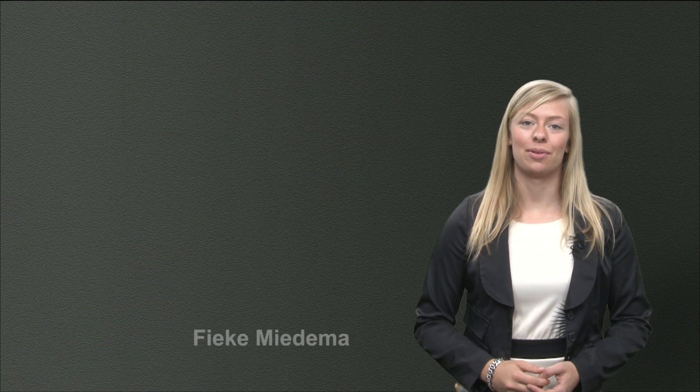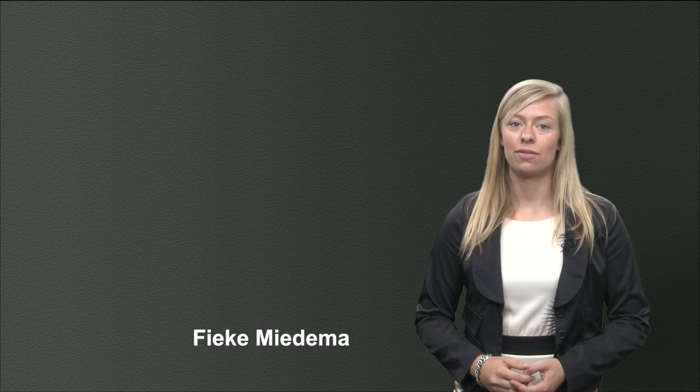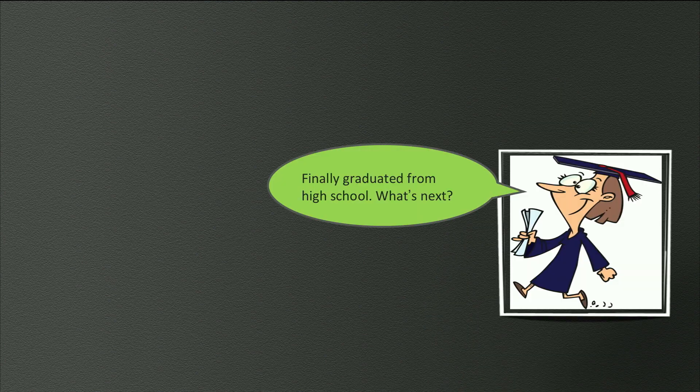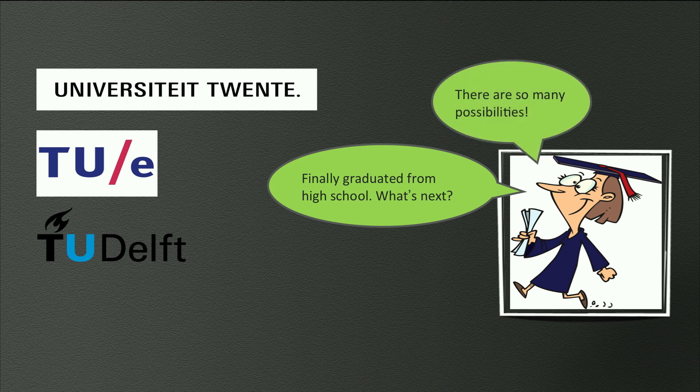Let's give you another example. A high school student just finished high school. For some of you that may be a situation of a long time ago, but for others it might just have happened a few years ago. Finally, graduation — but what to do now? There are so many possibilities. Let's help this graduate in his decision making by identifying criteria with a goal tree that will help him to decide on his next step after high school.